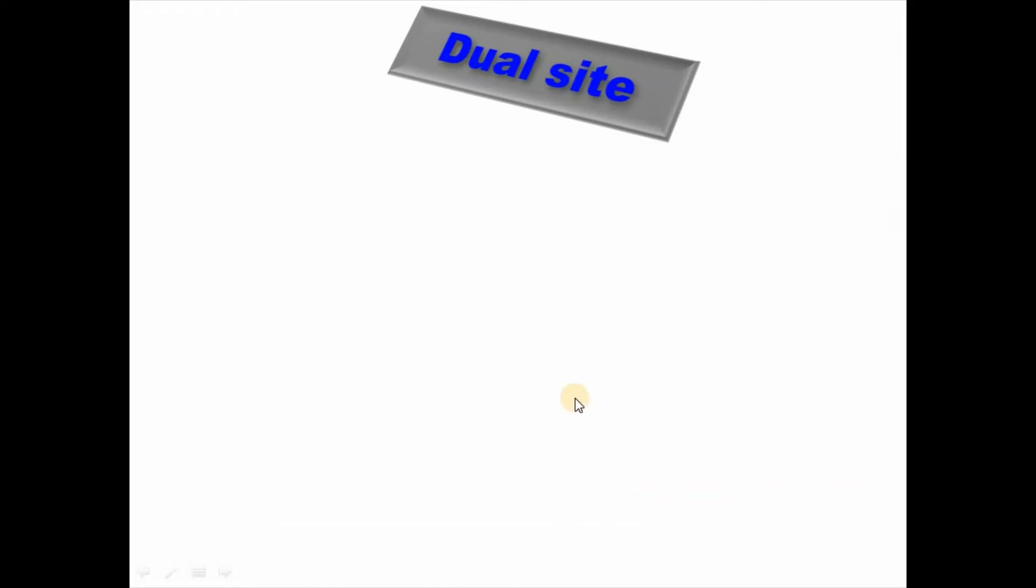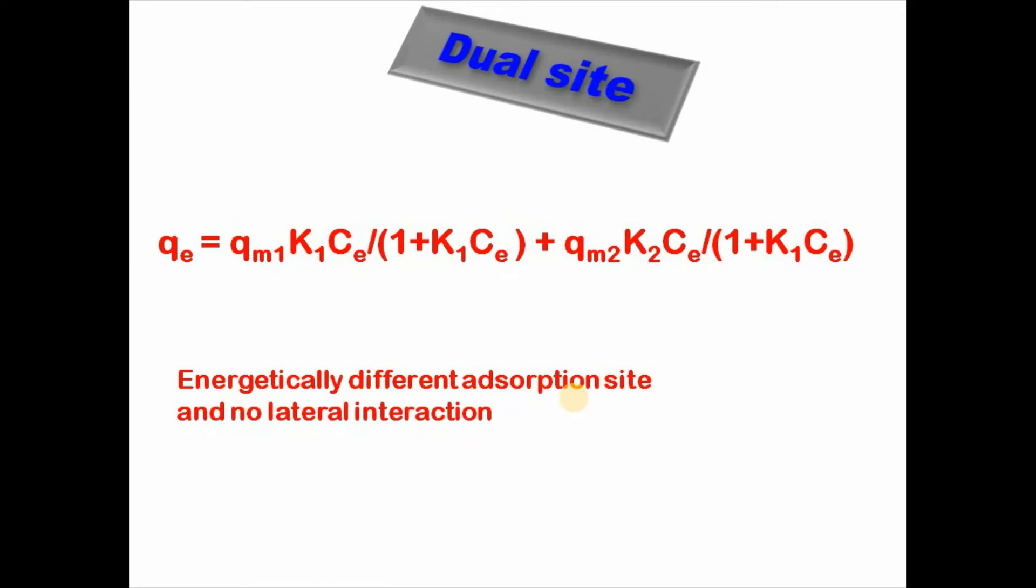Then comes dual-site. In this case, two adsorption sites are considered, and these sites are energetically different. And there is no lateral interaction between these two sites. Dual-site equation can be written as qe equals qm1 K1 Ce divided by 1 plus K1 Ce plus qm2 K2 Ce divided by 1 plus K1 Ce. This part is for site 1 and this part is for site 2. Hence, it is dual-site Langmuir isotherm model.